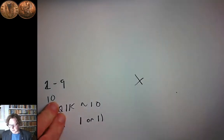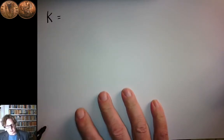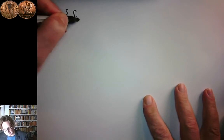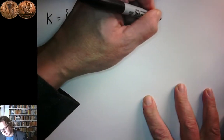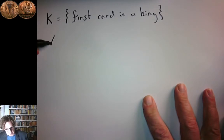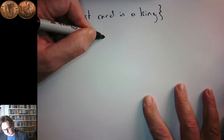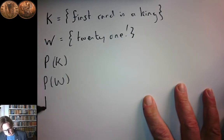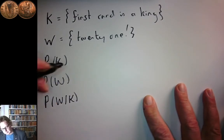So what we're going to ask is: what's the probability of some of these events? We're going to restrict ourselves to exactly two cards. We'll define an event K: the first of the two cards is a king. And a second event W: that you get 21. We'll work out the probability of getting a king first, the probability of getting 21 with just two cards, and then the conditional probability of getting 21 given that the first card is a king.